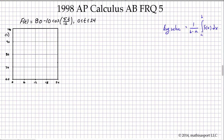In part A we just have to sketch the graph. Obviously we could just plug in points on our calculator and sketch it, but let's think a little bit about it to see if we can learn something. 80 is what we would call the sinusoidal axis — that's going to be the center of the graph. The amplitude will be 10. This is an upside-down cosine function, so it'll start out at 70 (80 minus 10) and then it'll reach as high as 90.